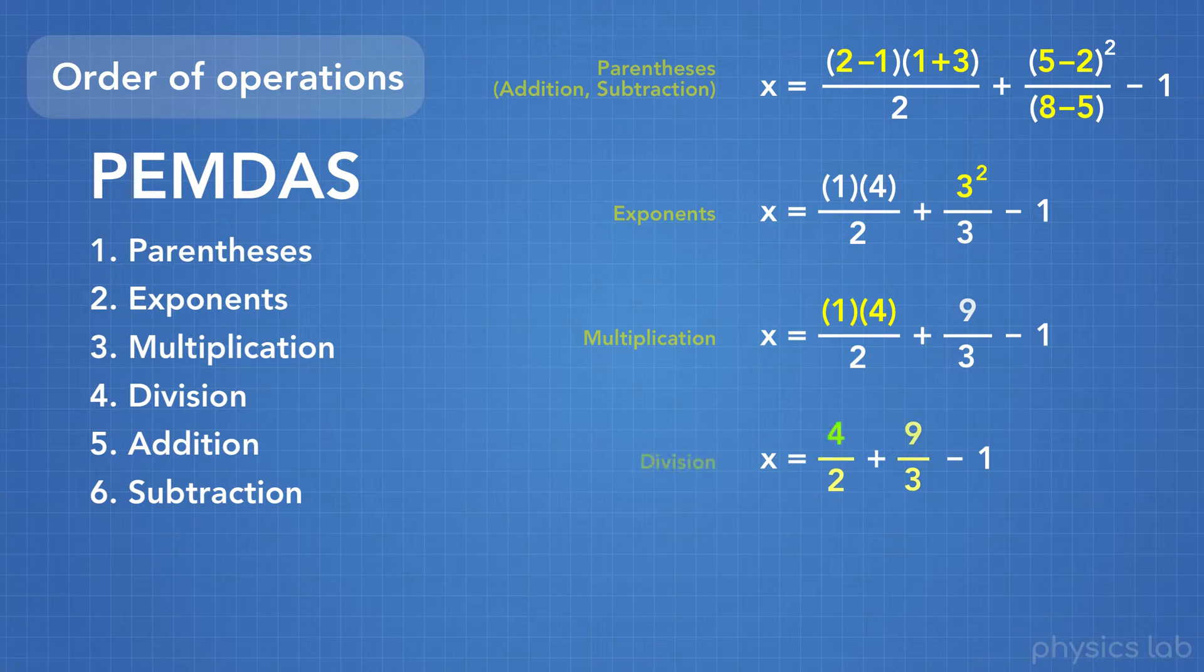Next we can do any division. Here we have 4 divided by 2, which becomes 2. And 9 divided by 3, which becomes 3.